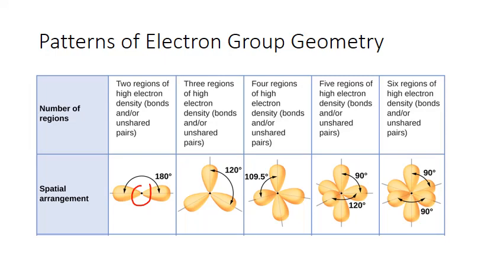We call this a linear electron geometry, because the groups would be in a straight line arrangement relative to each other.